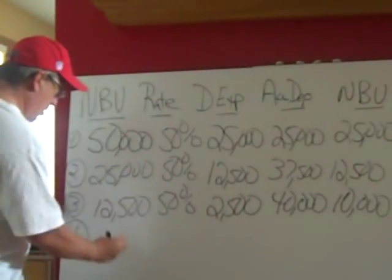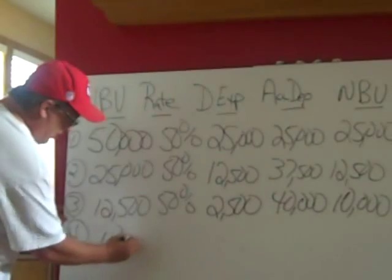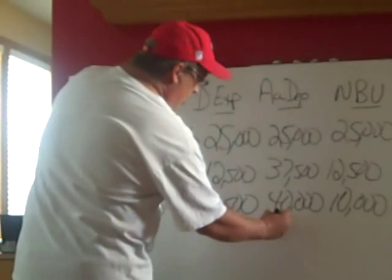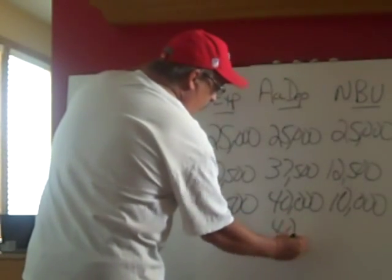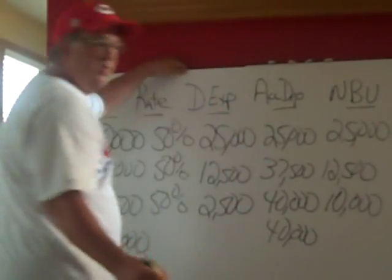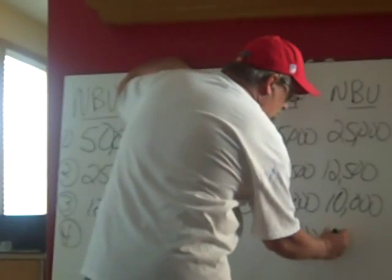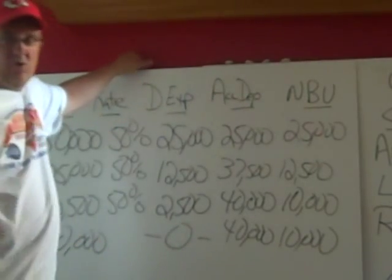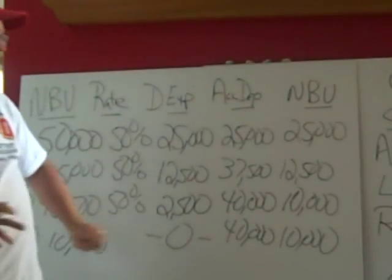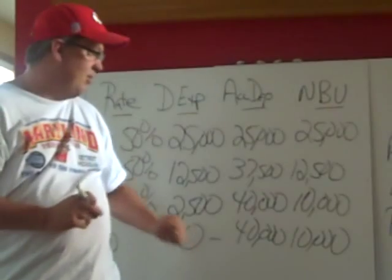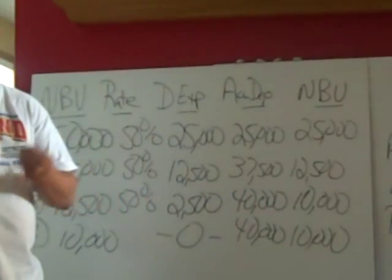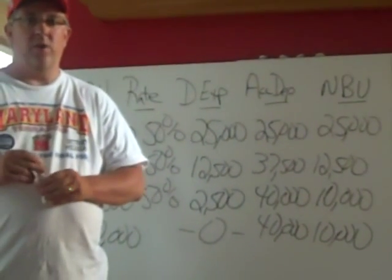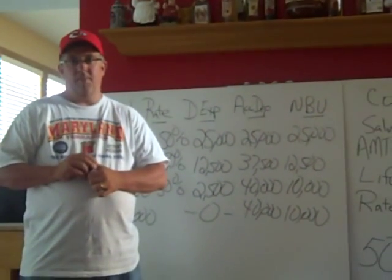So what happens in year four? Well, actually nothing. We start with the net book value of $10,000. Since we've already met our accumulated depreciation of $40,000, we're not taking any additional depreciation expense. Our depreciation expense for year four is going to be zero, so there will be no depreciation expense for that asset on our income statement. Our net book value on the balance sheet will be $10,000. And that is how we do double declining balance depreciation.